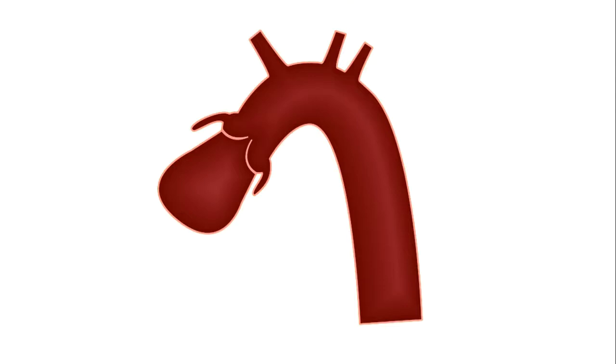This is a diagram of the aorta. This is the LVOT. This is the aortic valve. And these are the roots of the coronaries, which arise from the aorta just distal to the aortic valve from these pouches called the sinuses of Valsalva.